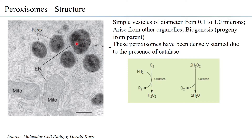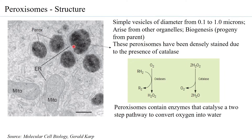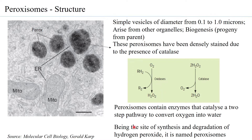Peroxisomes have been densely stained because of the presence of catalase. Most reactions that happen in peroxisomes follow a two-step pathway that converts oxygen — the coarse substrate — into water. Several oxidases present in peroxisomes oxidize a substrate, and in doing so, oxygen is converted to hydrogen peroxide. This hydrogen peroxide is then broken down into oxygen and water by catalases.